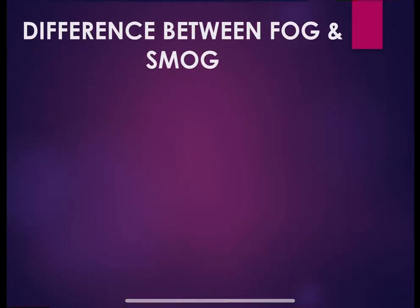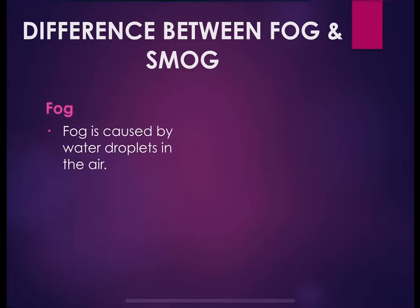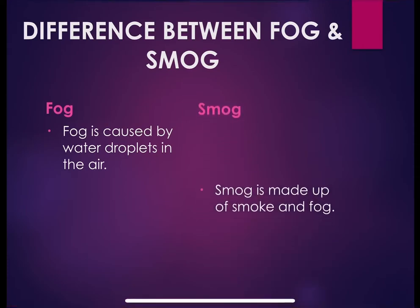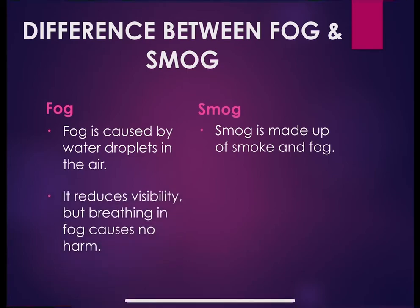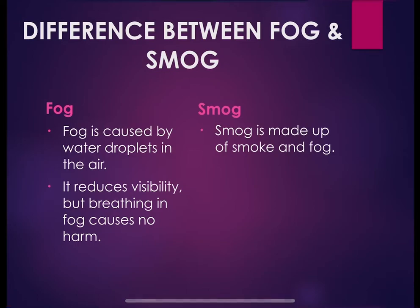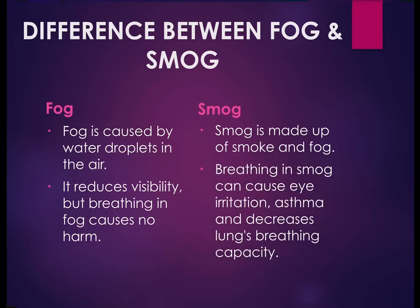What is the difference between fog and smog? Fog is caused by water droplets in the air, whereas smog is made up of smoke and fog. The second difference is fog reduces visibility but breathing in fog causes no harm. On the other hand, breathing in smog can cause eye irritation, asthma, and decreases lung breathing capacity.